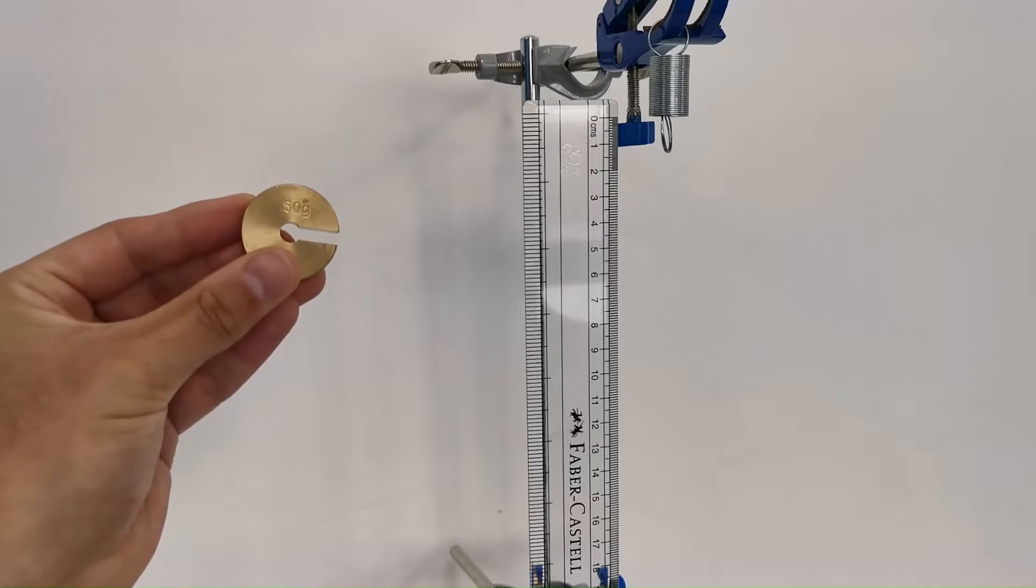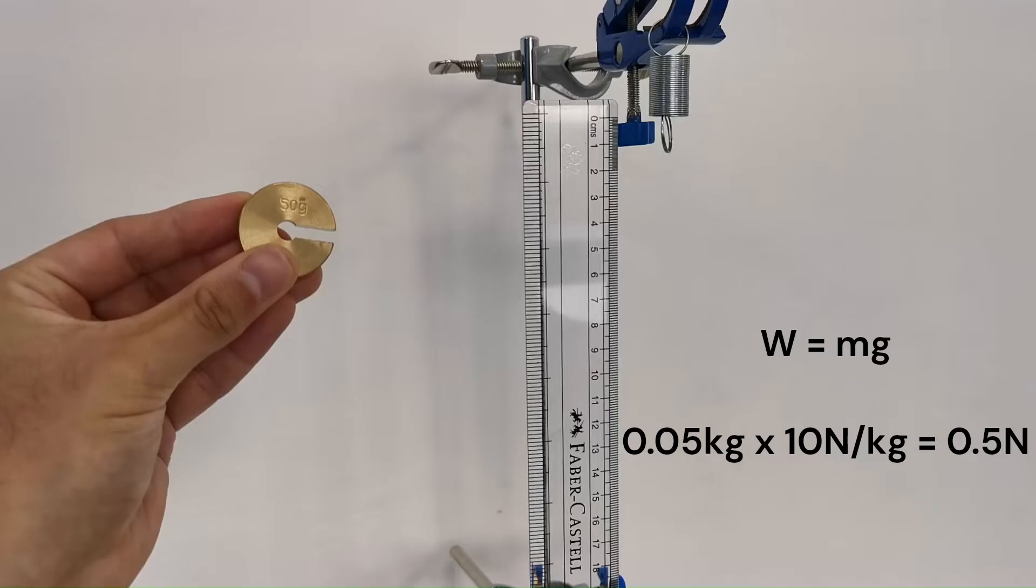To find the force applied by the masses, which is their weight, we use the formula weight equals mass multiplied by gravitational field strength.